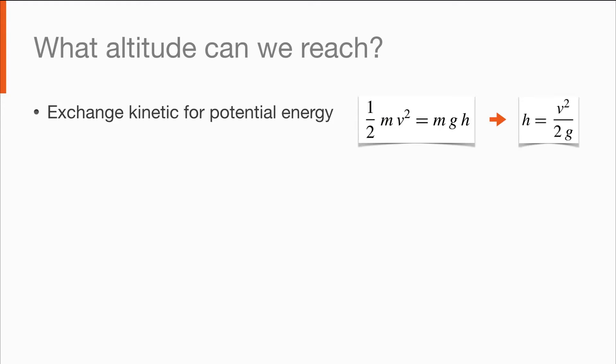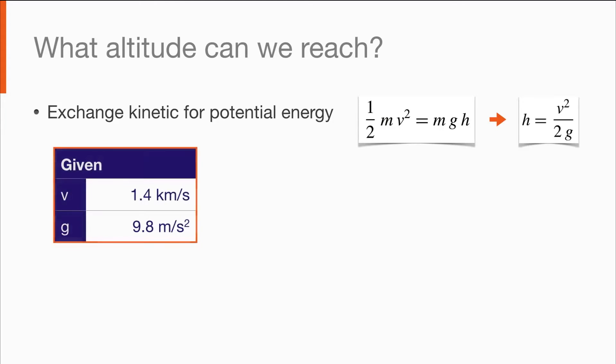Now I'm sure you're very strong, so imagine you throw this ball upwards with an initial speed of 1.4 km per second. Given that the gravitational acceleration is 9.8 m per second squared, we apply the formula, and discover that the ball achieves a height of 100 km. Now that's not too bad, as that's where the atmosphere ends and space begins.